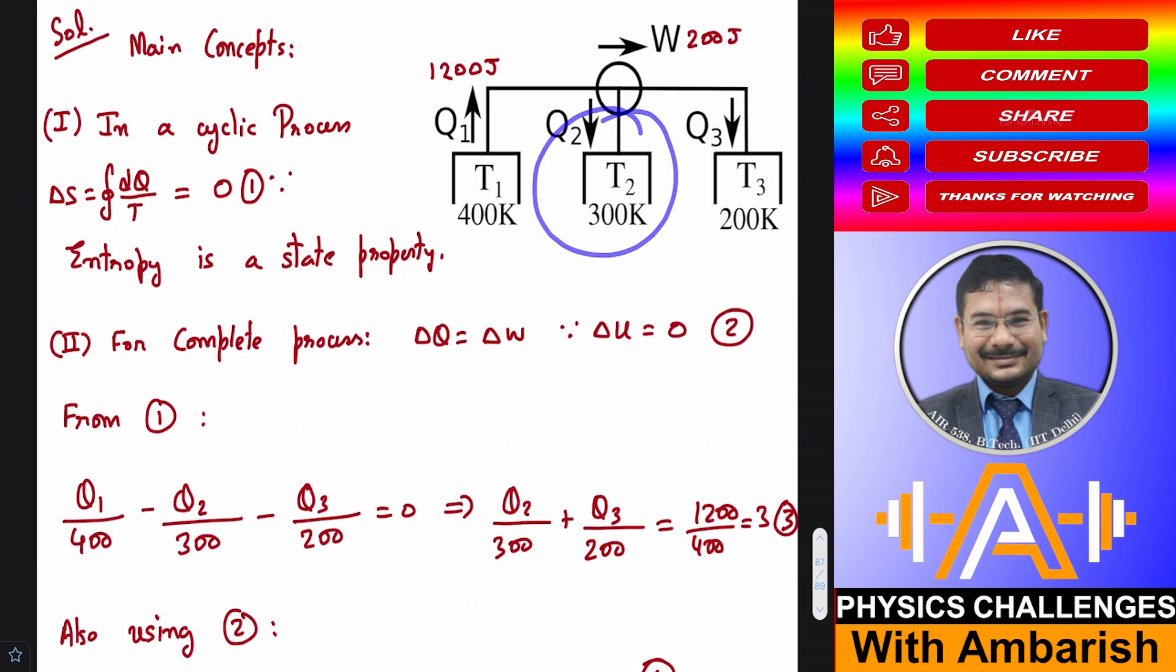And here the working fluid is rejecting Q2 heat at 300 Kelvin. So what's the entropy change here? That is minus Q2 by 300. And here again the working fluid is rejecting Q3 amount of heat at 200 Kelvin. So again minus Q3 by 200.